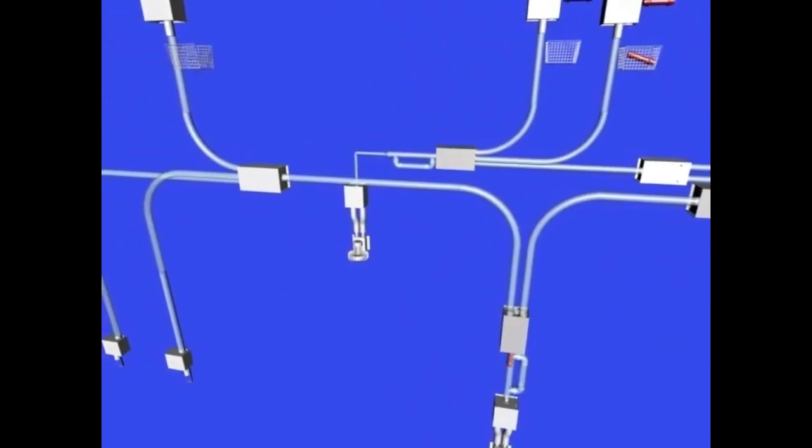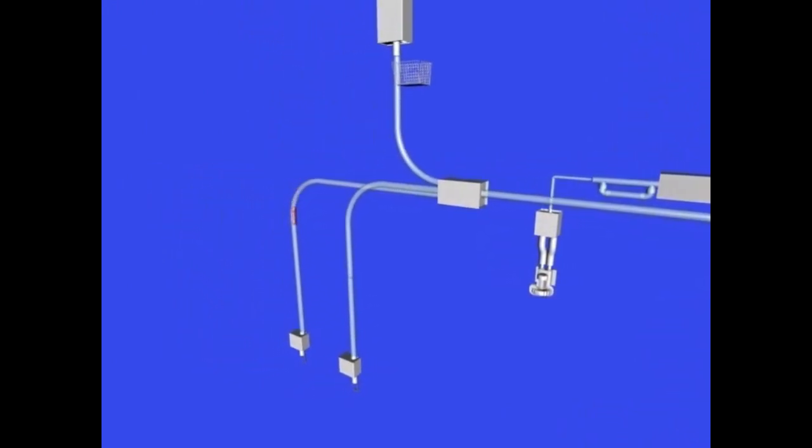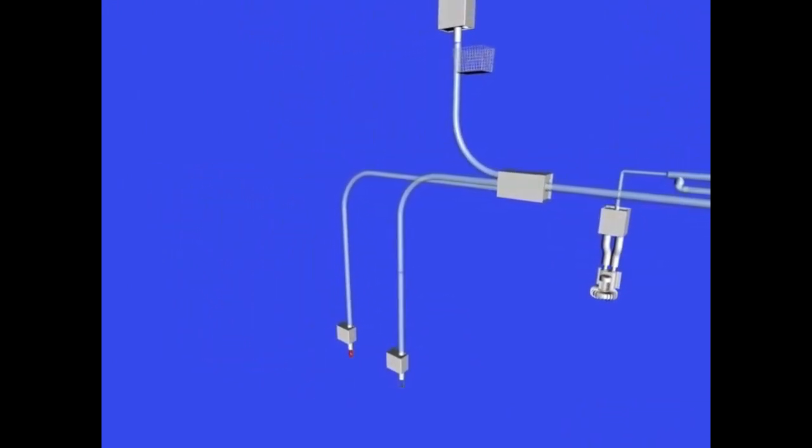By means of transfer units, a possibility to leave one line in order to continue on another is created. This compact crossing allows an automatic exchange of containers between several lines.